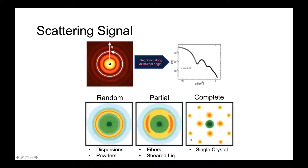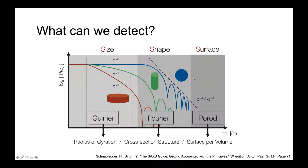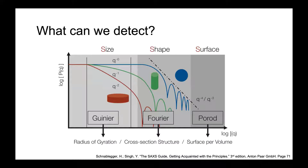The scattering curve has different sections relevant for analysis. From the first section, you can determine the size of your particle using a Guinier plot. From another section, you can extract the shape of your particle using a transform. And from the latter section, you can infer surface information. These are the three most commonly recognized regions of the SAXS data, each characteristic for a particular property you're looking for.